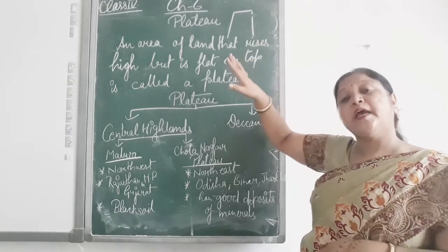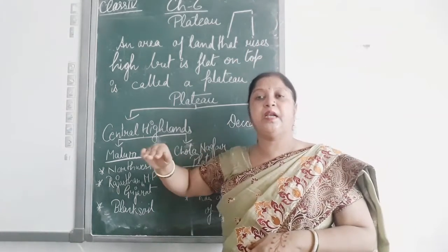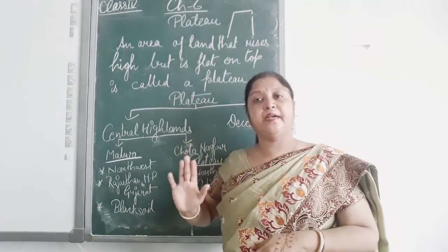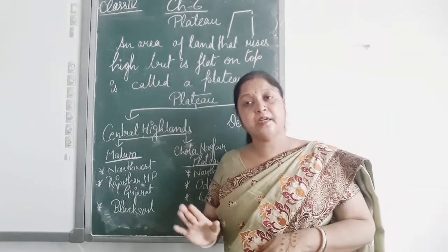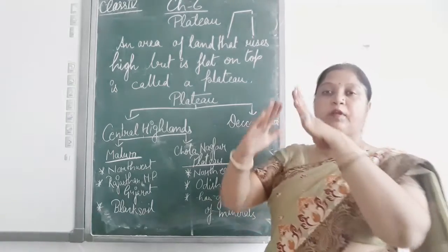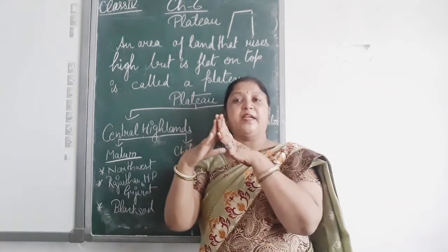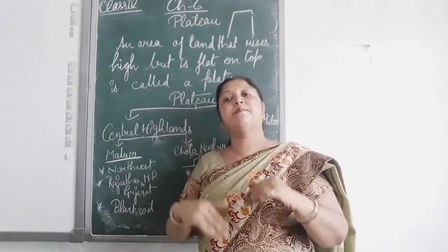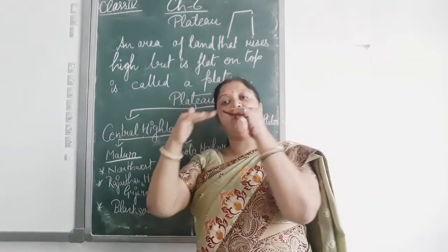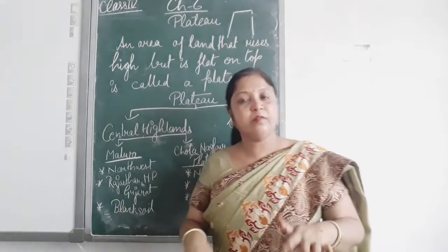Understand? Plateau is also known as Table Land. Plateau looks like a table, but a mountain is cone-shaped — mountain is cone shape. But Plateau is high but flat on the top, like a table. Understand?